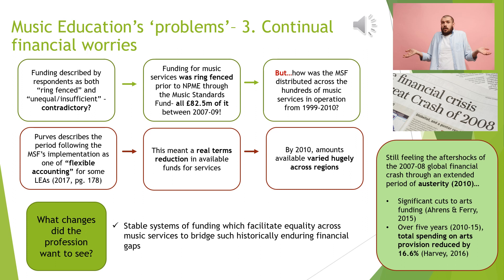Finally, respondents inconsistently described funding for music education as both ring-fenced and unequal and insufficient, particularly for frontline delivery. Ring-fenced in this case means a grant or fund with restrictions so that it can only be spent on one particular purpose. Figures quoted in the House of Commons in early 2009 cited the £82.5 million of ring-fenced grant that music services had received across 2007–8 and 2008–9.